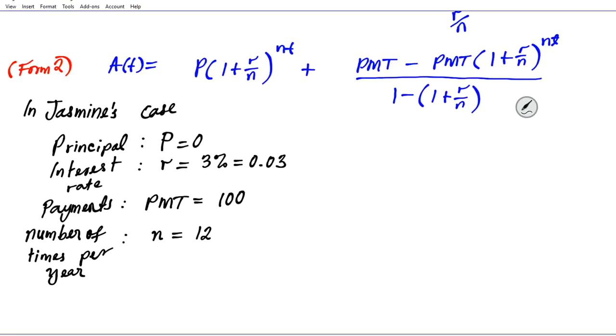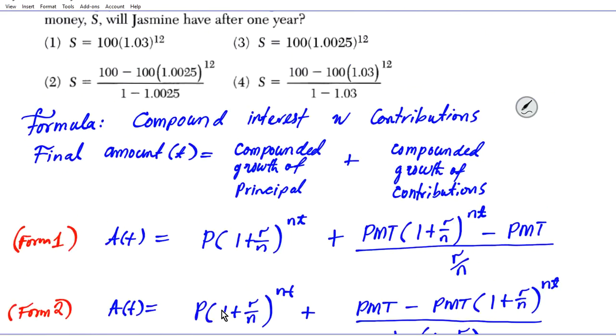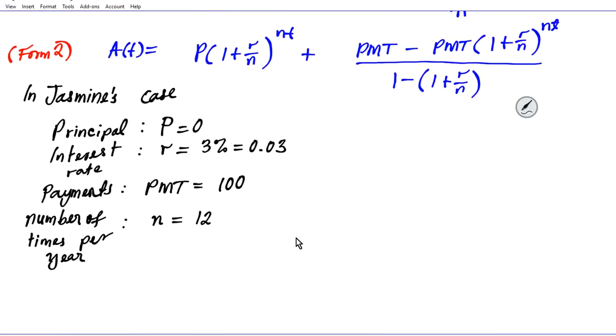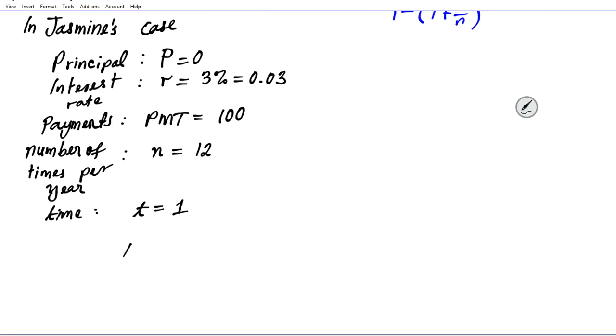In this problem we want to figure out how much she has after one year, so the time component t is simply 1. We're looking for A(1), the amount after one year.